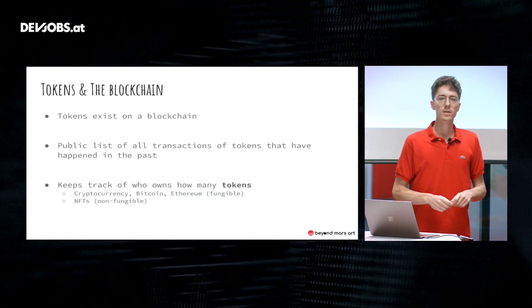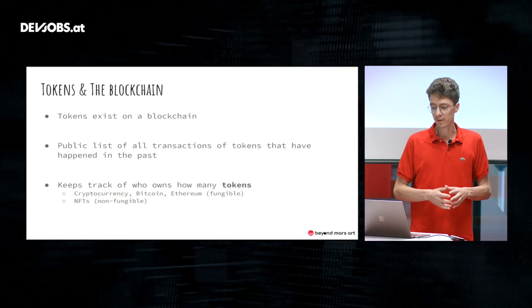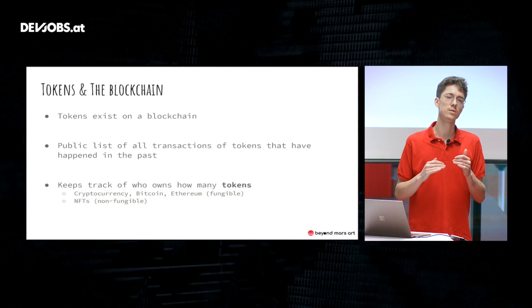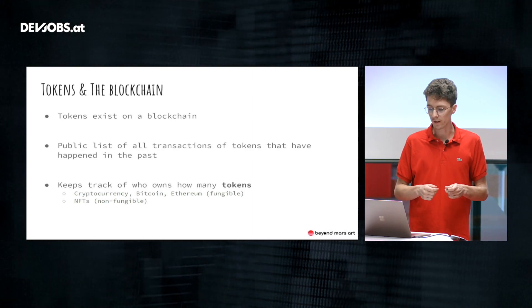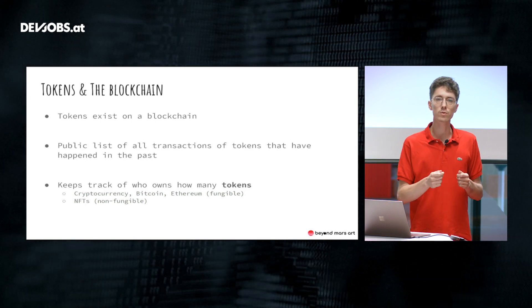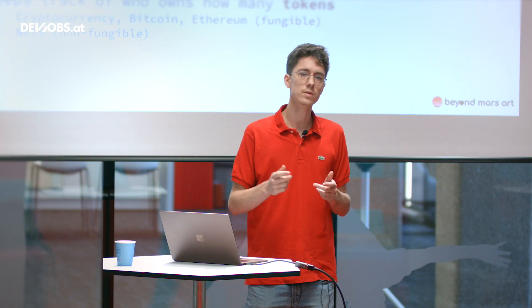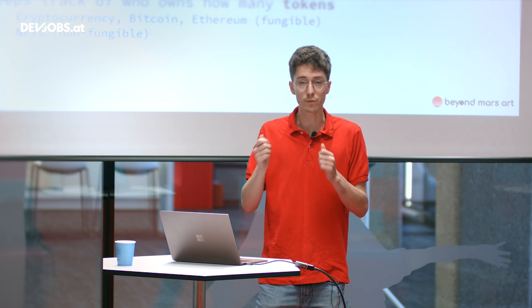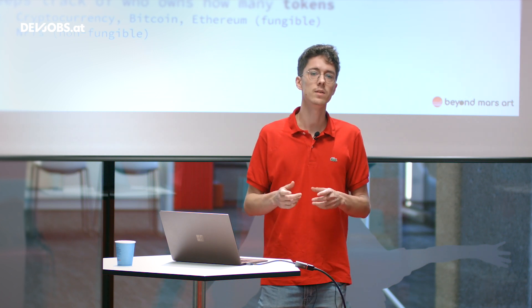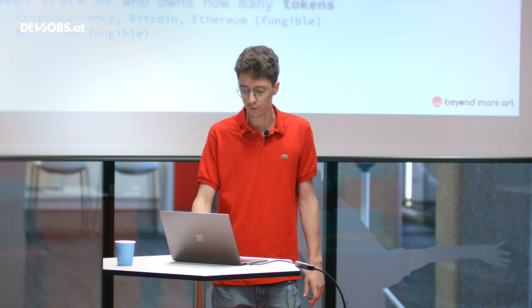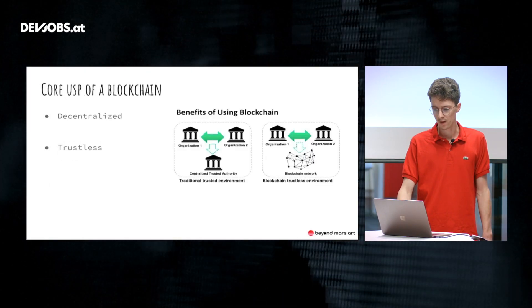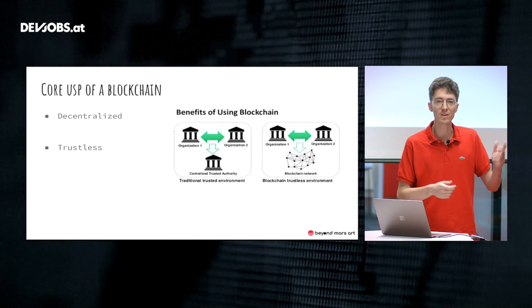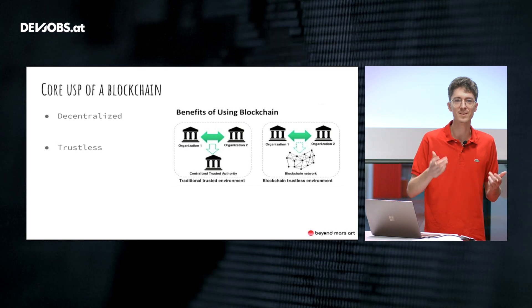A token exists on a blockchain. At its core, a blockchain is just a public list of all transactions that have happened with tokens. By doing this it keeps track of who owns how many tokens. Tokens can be any cryptocurrency — Bitcoin or Ethereum — and those are fungible ones, or it can also be an NFT, the non-fungible tokens. You might think: why do I need a fancy blockchain to keep track of transactions? My bank does that, or I can do it in an Excel spreadsheet.